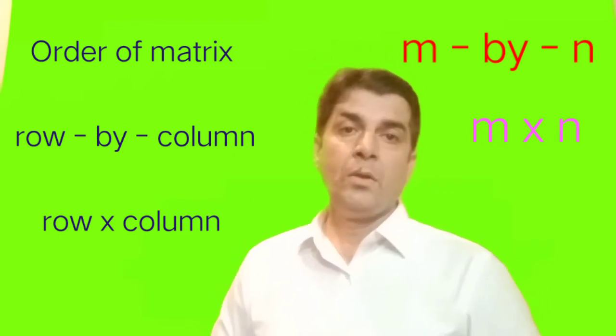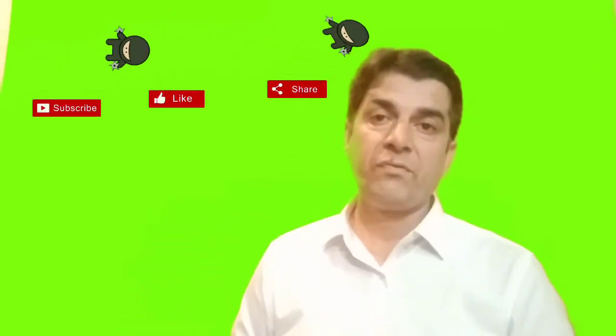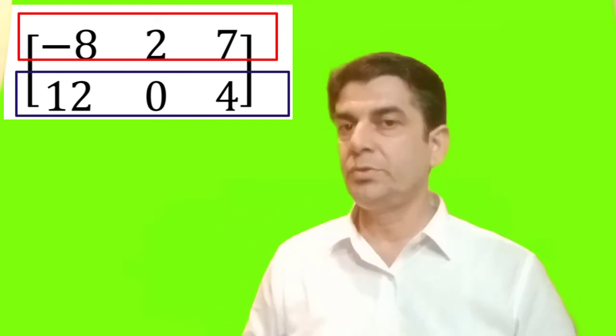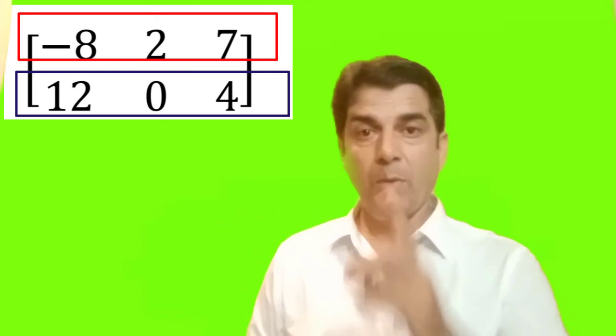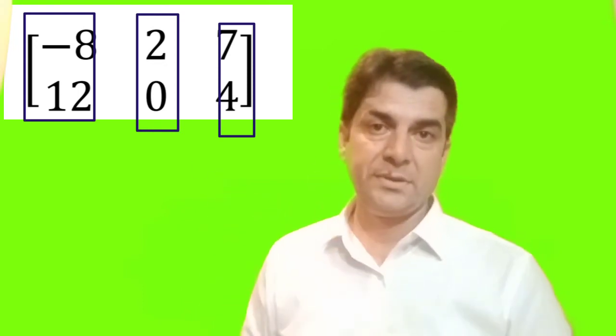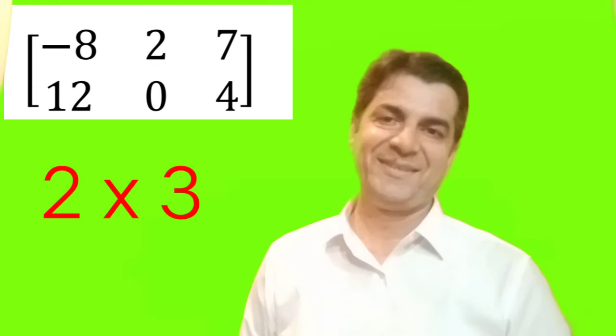So now we shall start some examples that what is the order of this matrix. So first of all, we shall see how many rows are there. Here there are only two rows and how many columns are there. In this example, there are three columns. So order of matrix will be 2 by 3. It's so simple.